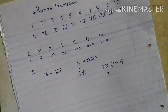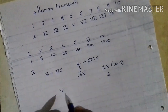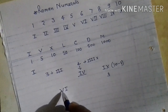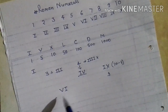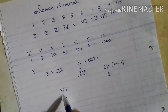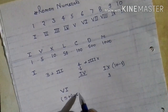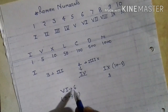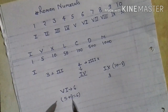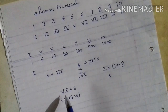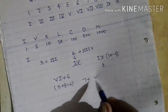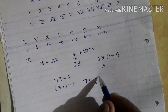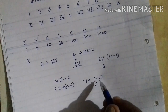If a smaller number is written to the right of a bigger number, then it is added. For example, this is 5, and we write I to the right of V, then it will be added: 5 plus 1 equals 6. This number is 6. We can write 6 in Roman numerals like this. For 7, this is 5 plus 2, so we write double I — this is 7.